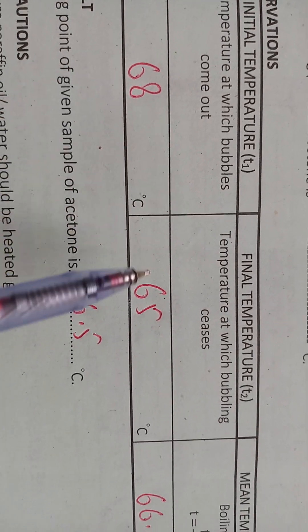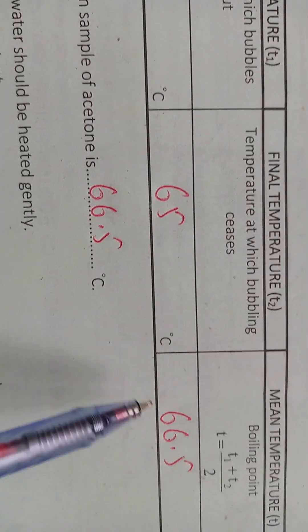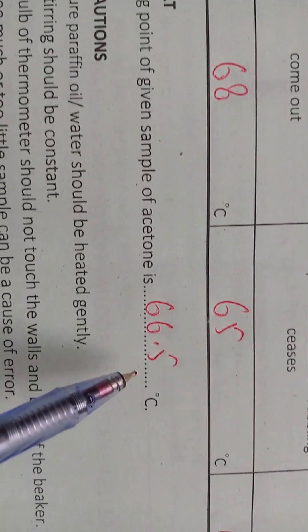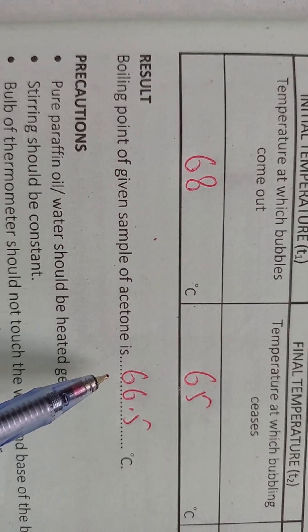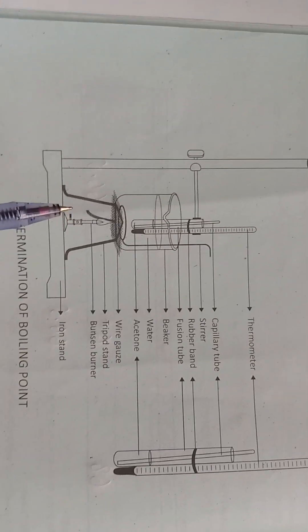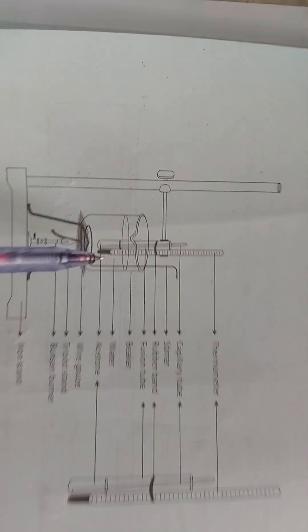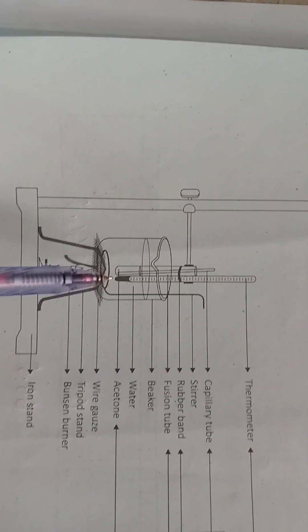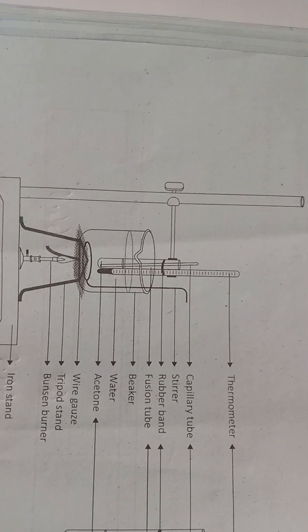We have done T1 plus T2 divided by 2: (68 + 66) / 2 = 66.5. This is the average boiling point of acetone. Students, make this diagram in your book. Kindly don't forget to hit the bell icon, like and subscribe to my video, and write your comments in the comment box. Thank you very much, students.